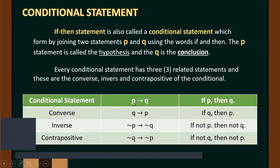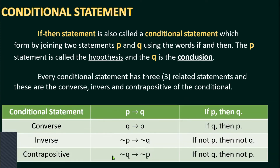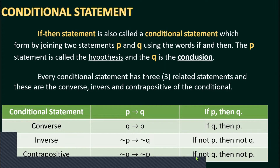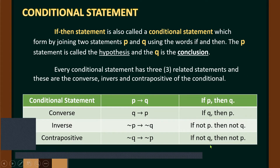The conditional statement is P implies Q: 'If P, then Q.' For the converse, the hypothesis and conclusion are interchanged, so Q implies P: 'If Q, then P.' For the inverse, we use a negating symbol — so not P implies not Q: 'If not P, then not Q.' For the contrapositive, we also negate both, so not Q implies not P: 'If not Q, then not P.' This is the pattern we follow to write the conditional, converse, inverse, and contrapositive.